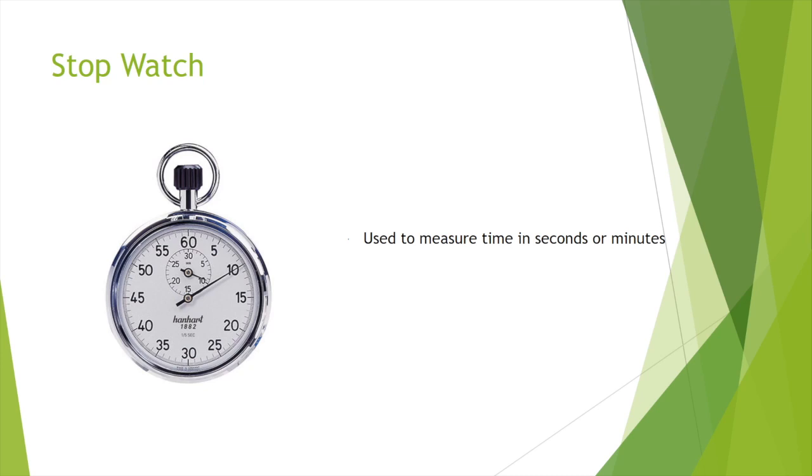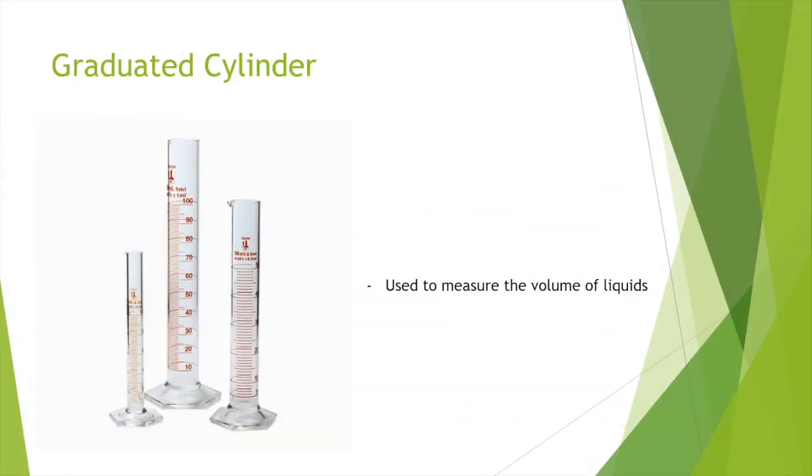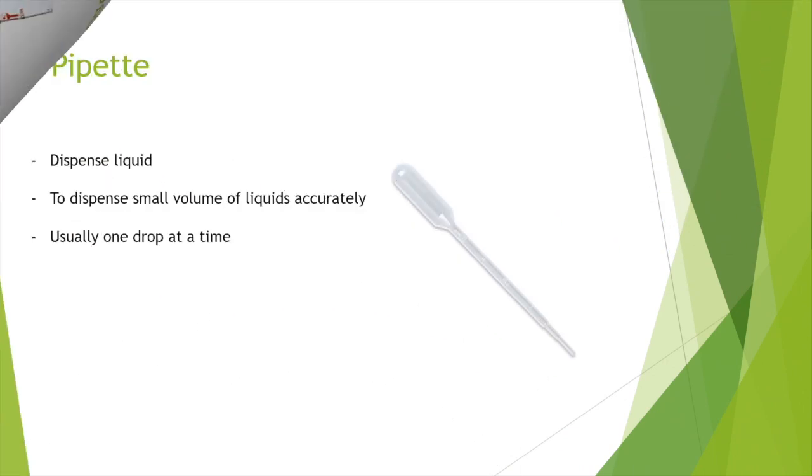This is a graduated cylinder. It comes in various sizes to measure different volumes of liquids. This is a disposable pipette. We use this when we want to dispense small droplets of liquid.